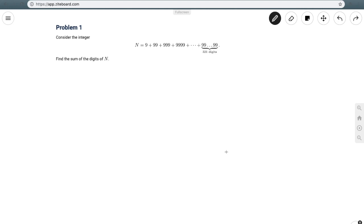And the question is, consider the integer n equals 9 plus 99 plus 999 plus 9,999, all the way until the number created by 321 nines. And the question asks, find the sum of the digits of n.